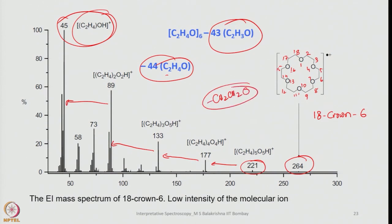In crown ethers, fragmentation happens with a regular decrease in the molecular ion peak with a mass of 44, corresponding to CH₂CH₂O. I will continue in my next lecture with more examples before concluding mass spectrometry, and then combine these mass spectrometry issues with NMR or IR to solve problems. Until then, have an excellent time — thank you.